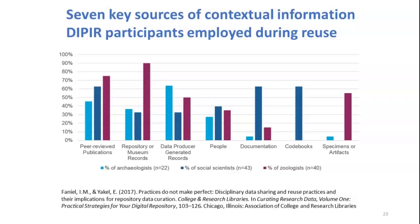I have a question for you all: how have data reuse needs — the different types of context, trust markers, sources of context information — influenced your work to support researcher demand at the point of deposit as well as at the point of dissemination?